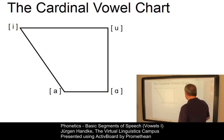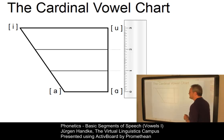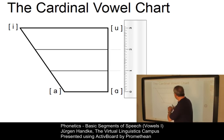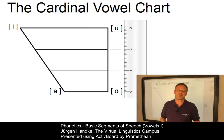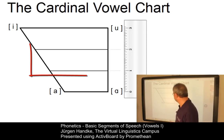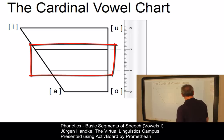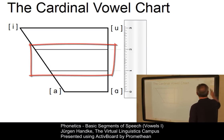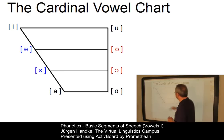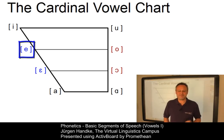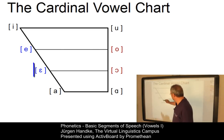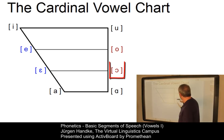Between these four main reference points, we can now insert two auditorily equidistant steps by means of two horizontal lines and define further vowels. These give us another front vowel which is now mid-high, a second front vowel E, and on the back side a back vowel O and another O.